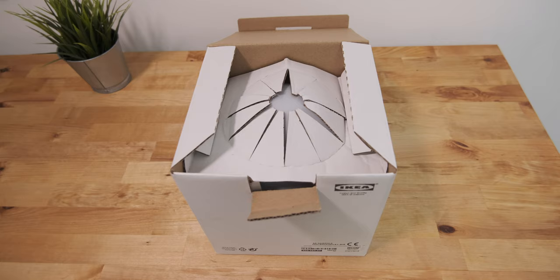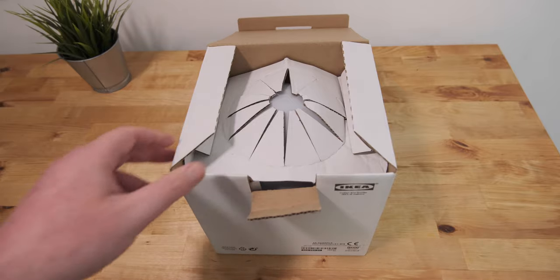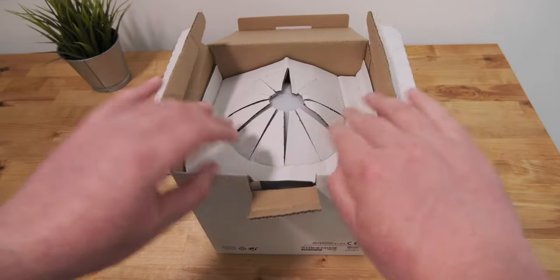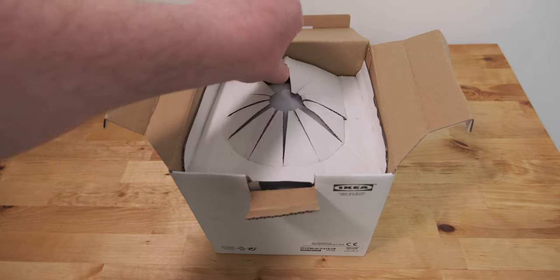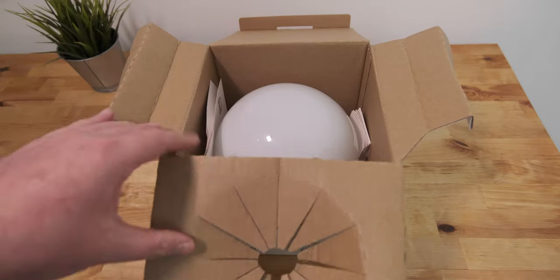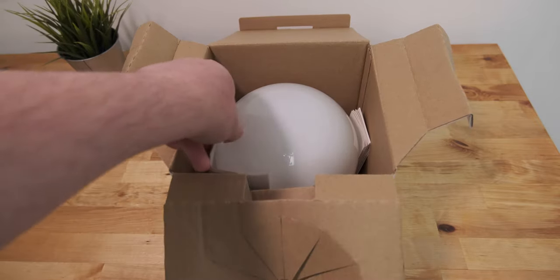This lamp is a relatively recent addition to Ikea's lighting line-up and it comes in two sizes. A 25cm version which takes E27 bulbs and a smaller 17cm version that takes E14 bulbs. The version I'm reviewing in this video is the smaller 17cm version.